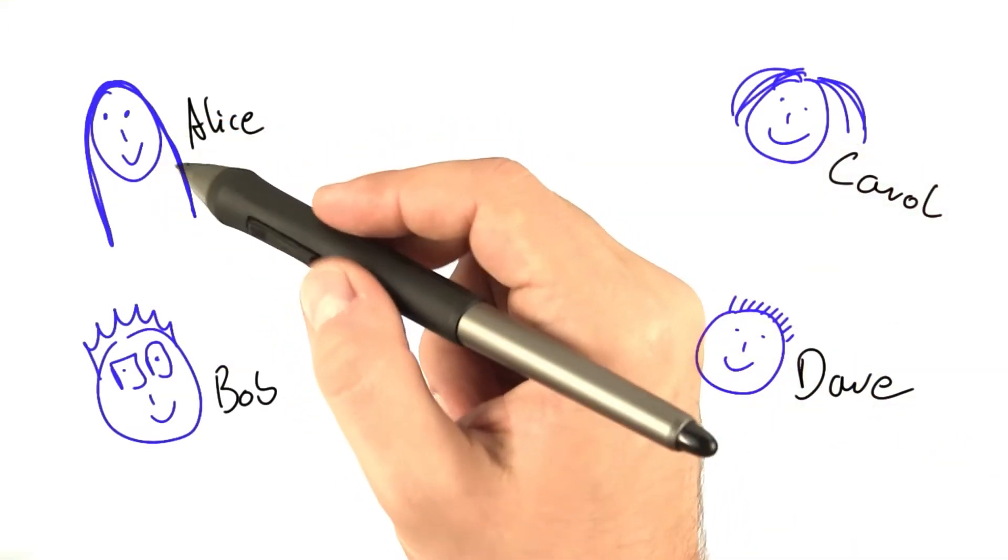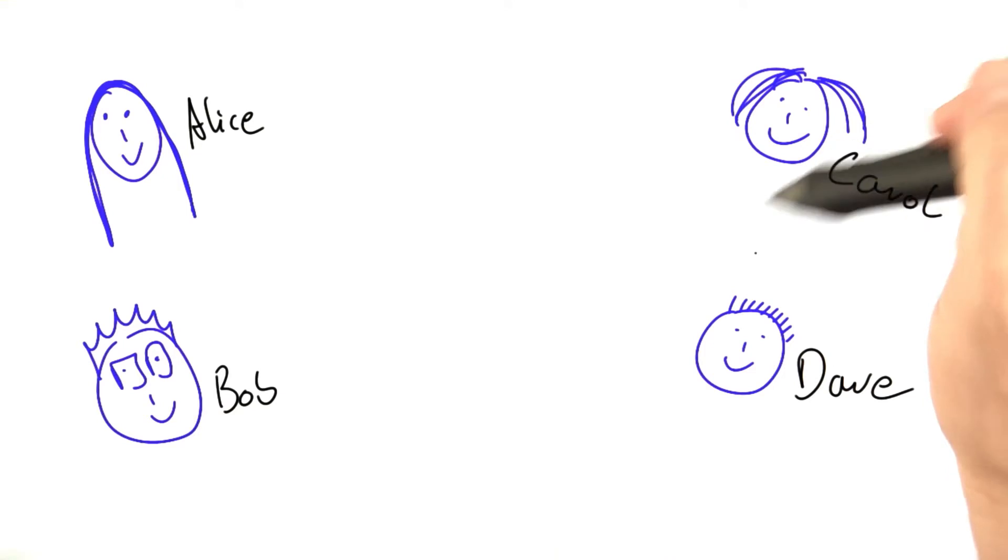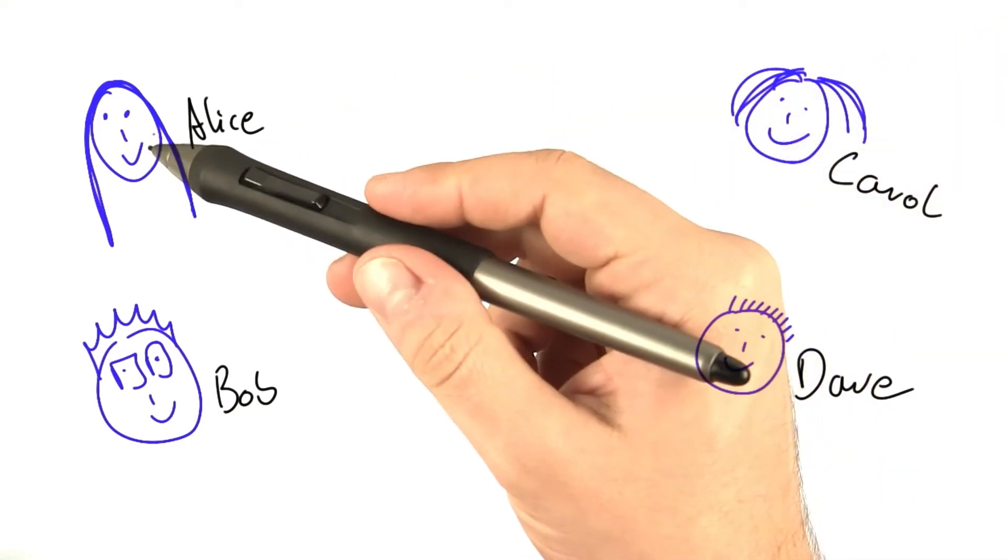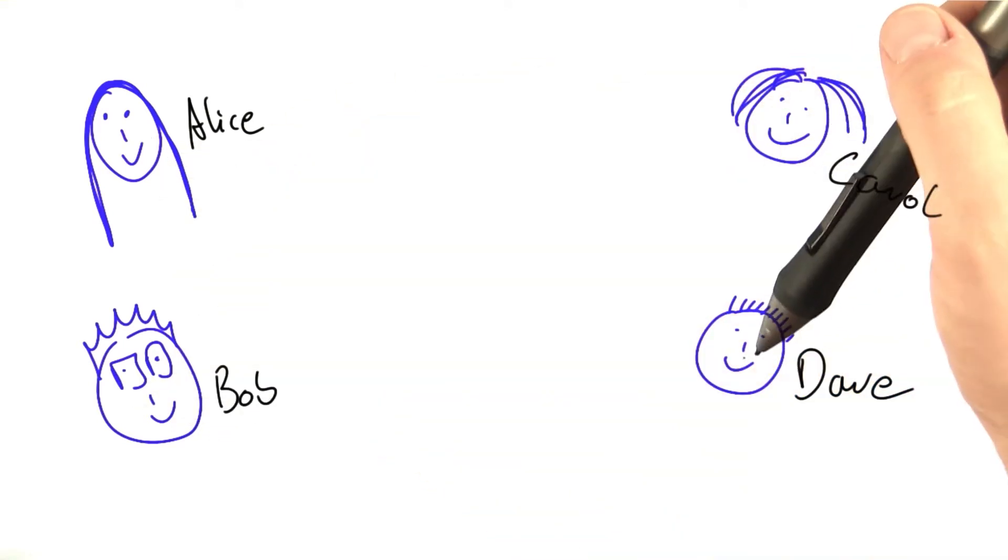Because imagine you find yourself in a situation like the four computer scientists that we have gotten to know throughout this course: Alice, Bob, Carol, and Dave.